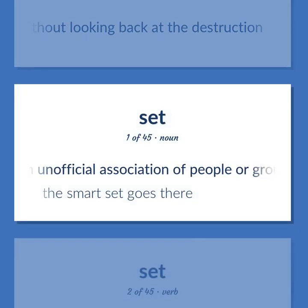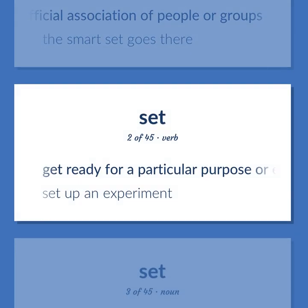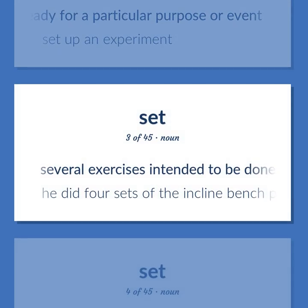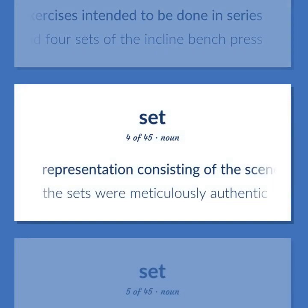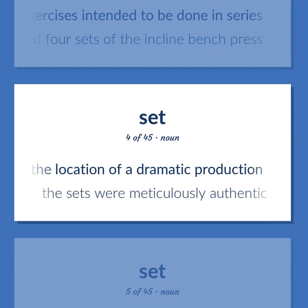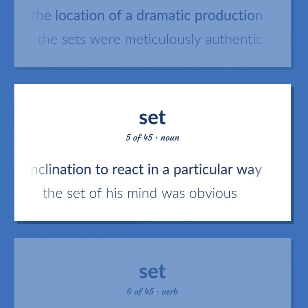An unofficial association of people or groups. The smart set goes there. Get ready for a particular purpose or event. Set up an experiment. Several exercises intended to be done in series. He did four sets of the incline bench press. Representation consisting of the scenery and other properties used to identify the location of a dramatic production. The sets were meticulously authentic. A relatively permanent inclination to react in a particular way. The set of his mind was obvious.